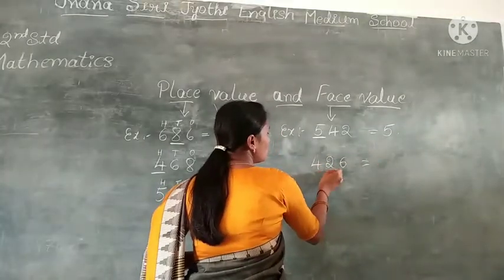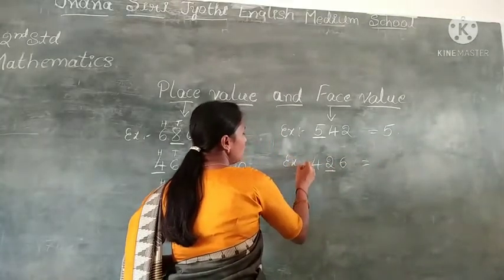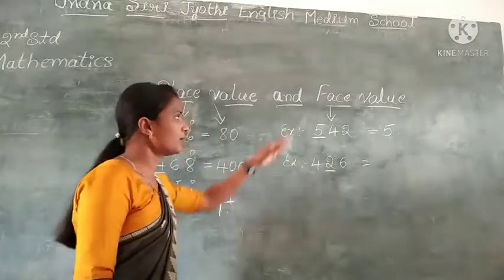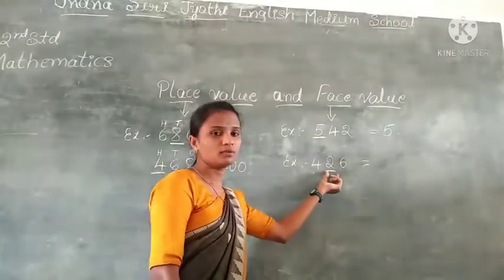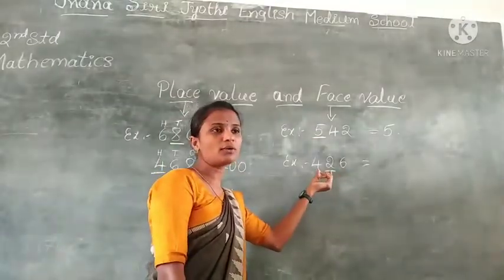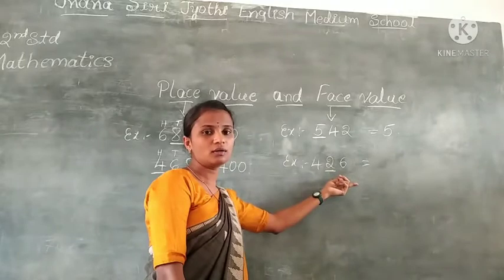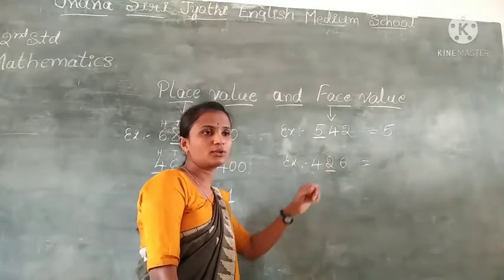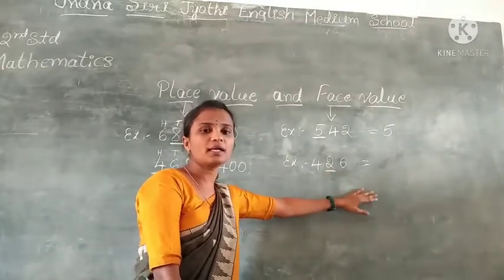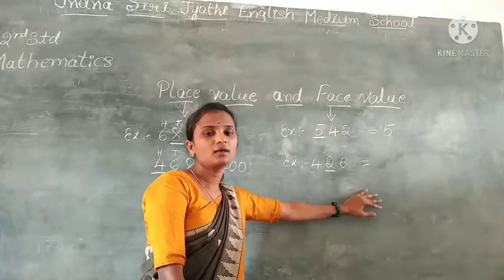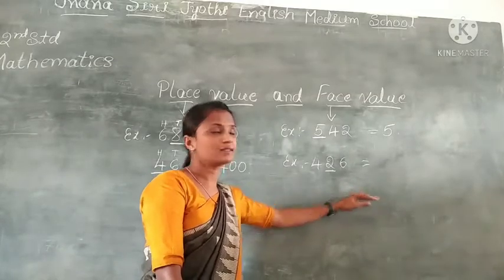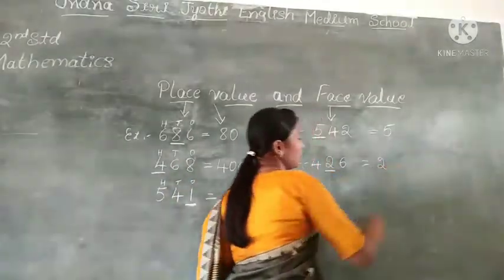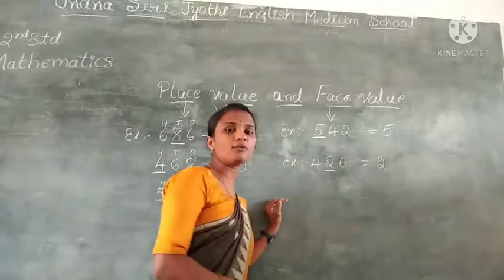So what is the face value of 2? What do you have to write — 20 or 2? You simply write 2 only. Don't write 20.